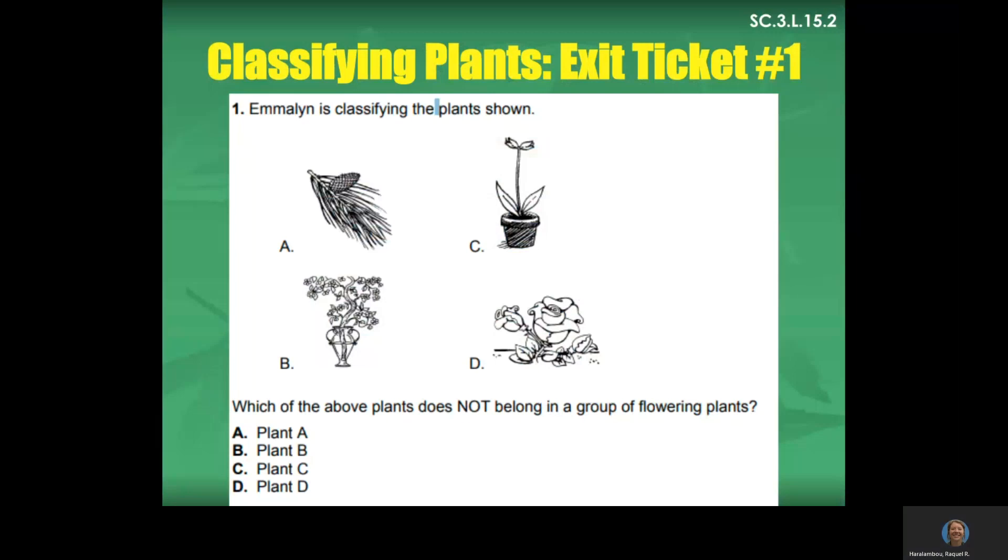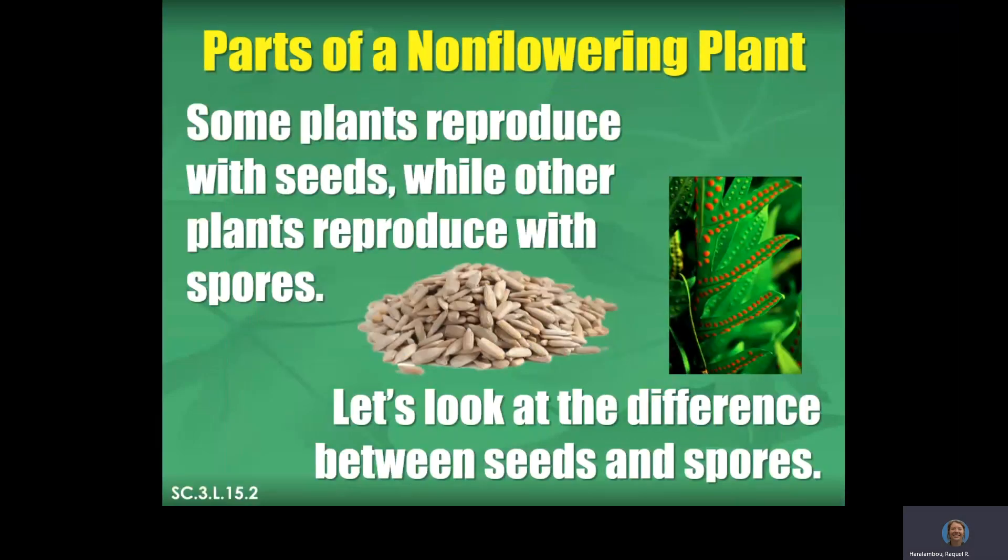All right, so let's look at exit ticket one. Emeline is classifying the plants shown. Which of the above plants does not belong in a group of flowering plants? So remember, flowering plants are the ones that are going to produce flowers. So which one does not belong? Is it plant A, B, C, or D? Good, yeah, A. A is a type of fern. So it has those needle-like leaves rather than our flowers having regular leaves. Very good. So non-flowering. These are over here, guys, these red parts on these leaves. These are called spores. So that's how that plant is going to reproduce rather than having a bee land and move the pollen to the anther and all of that. These spores actually reproduce the plants here.